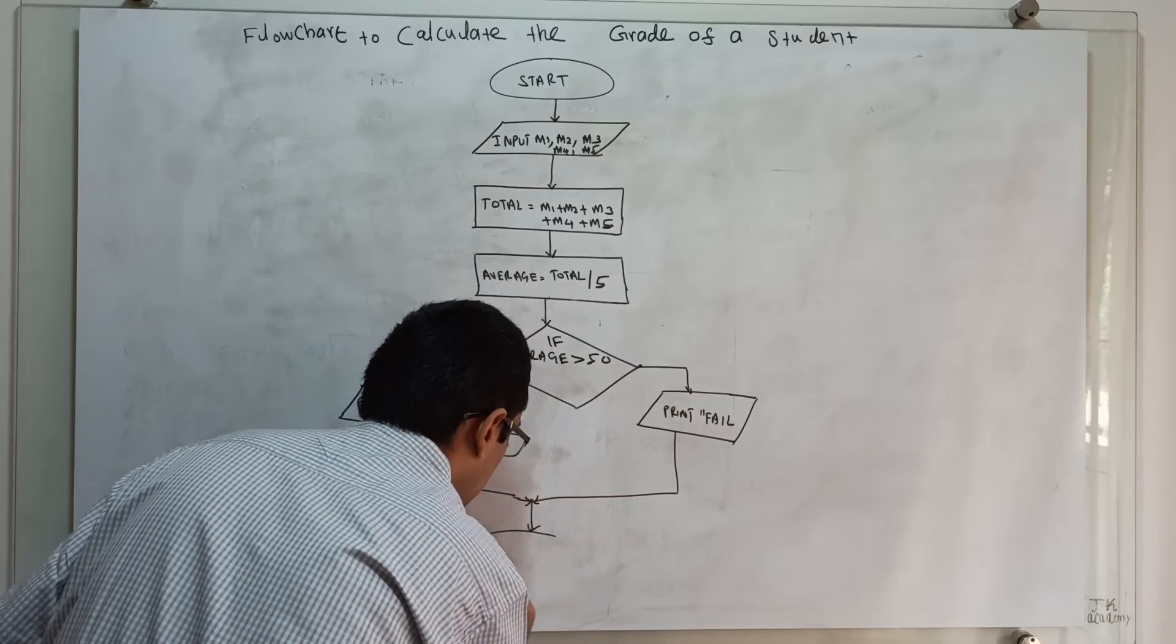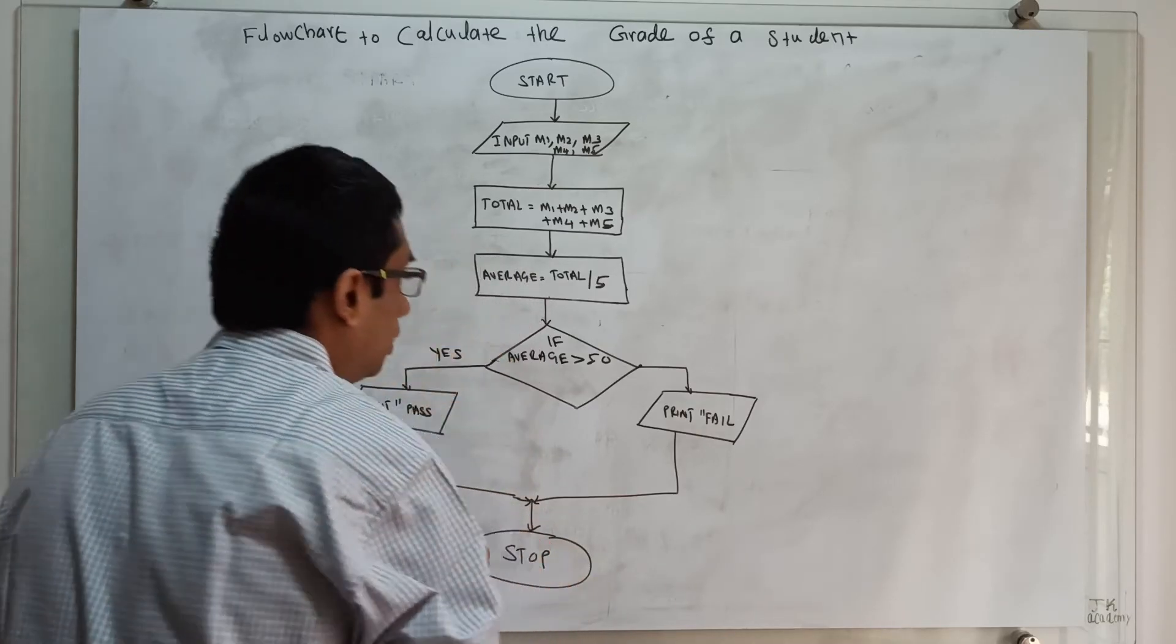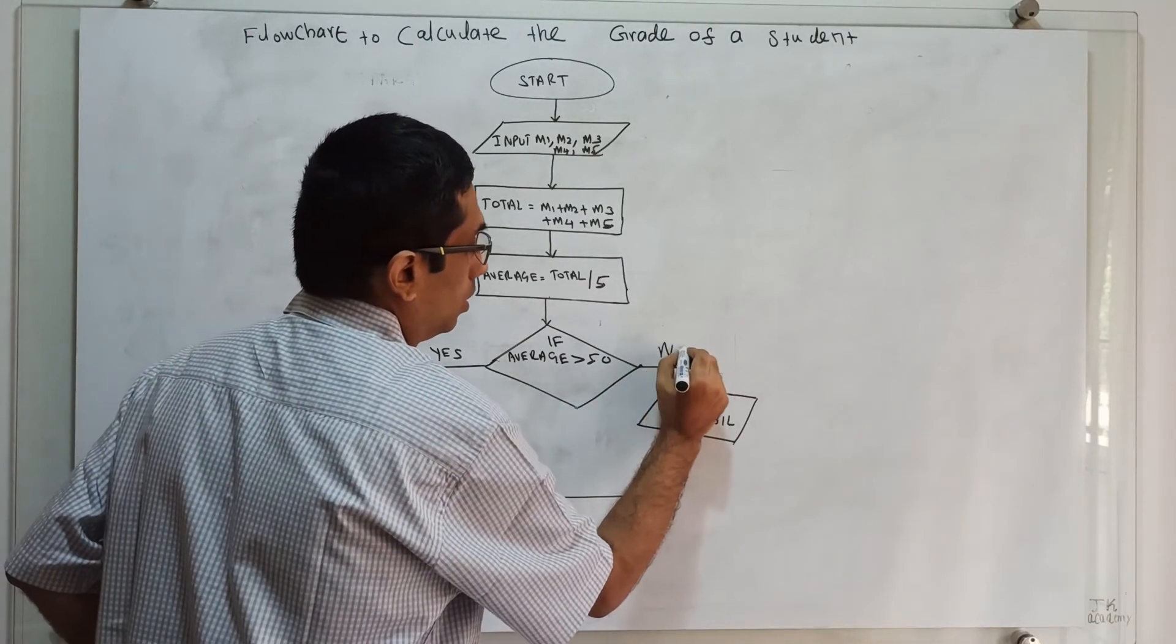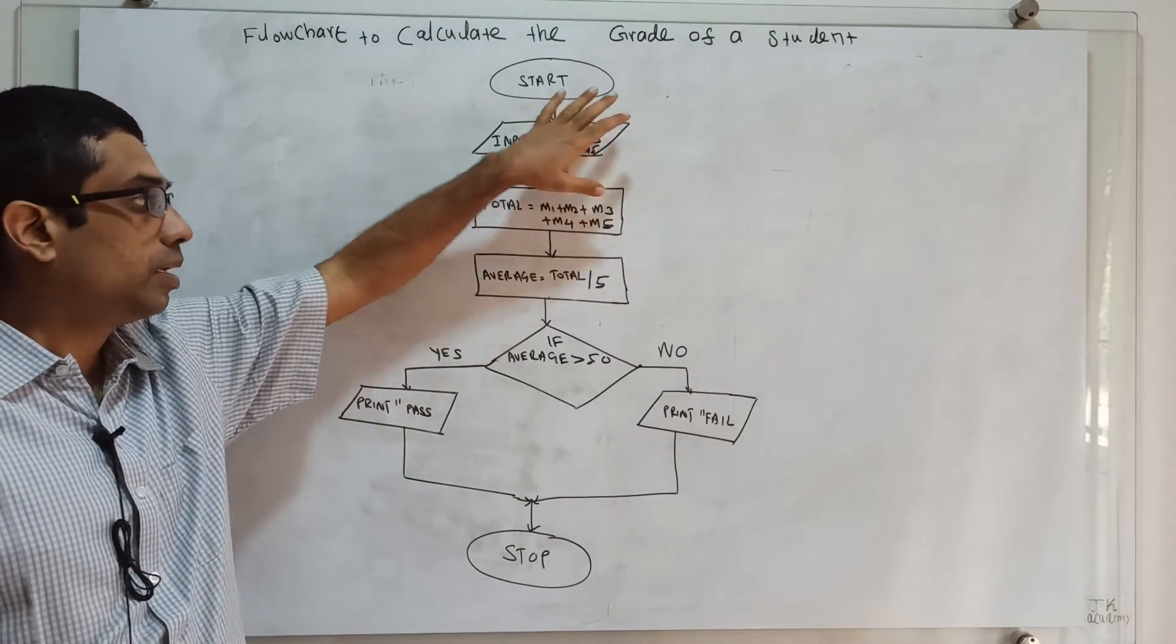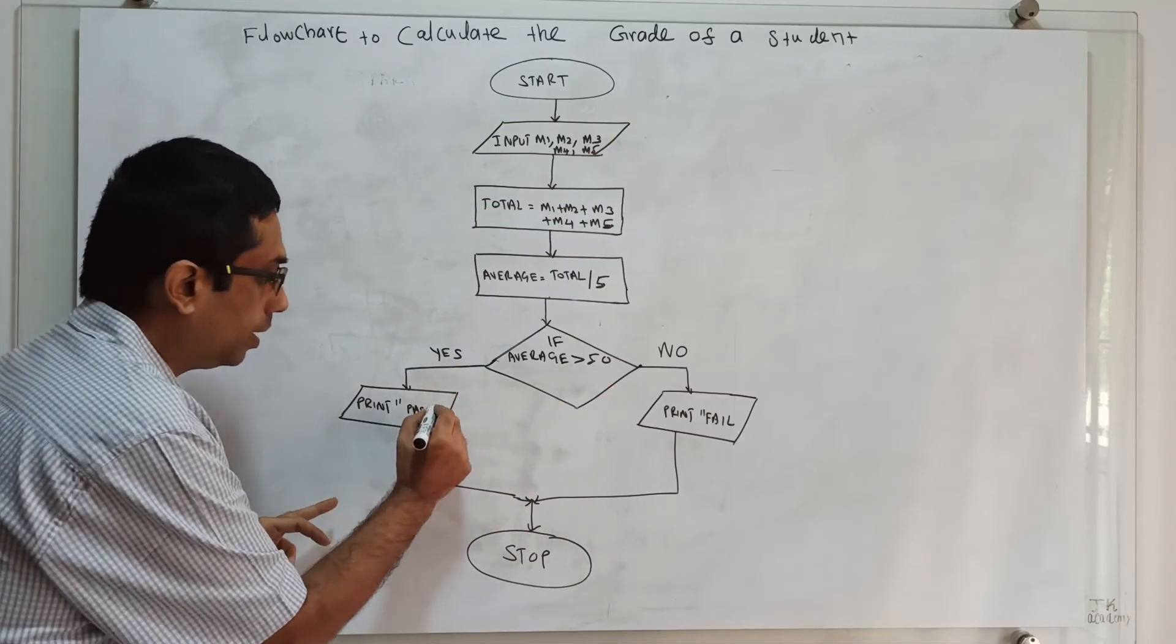That's it. I obtained five subjects marks, calculated the total, calculated the average, and checked if average is greater than 50. I print it as pass...